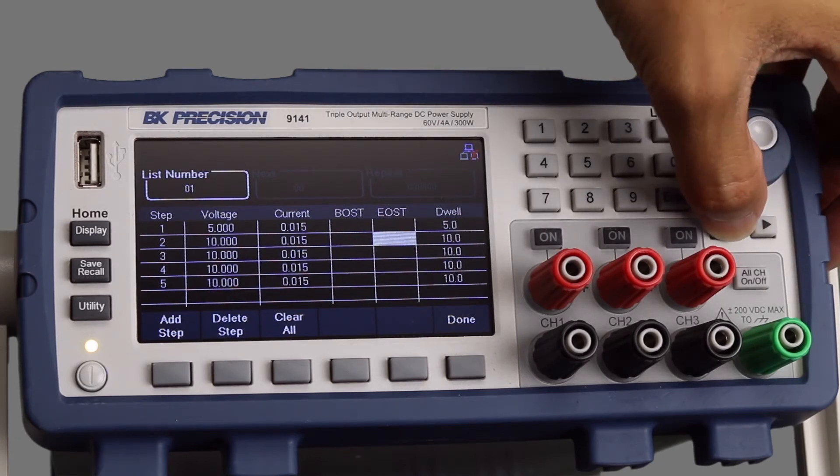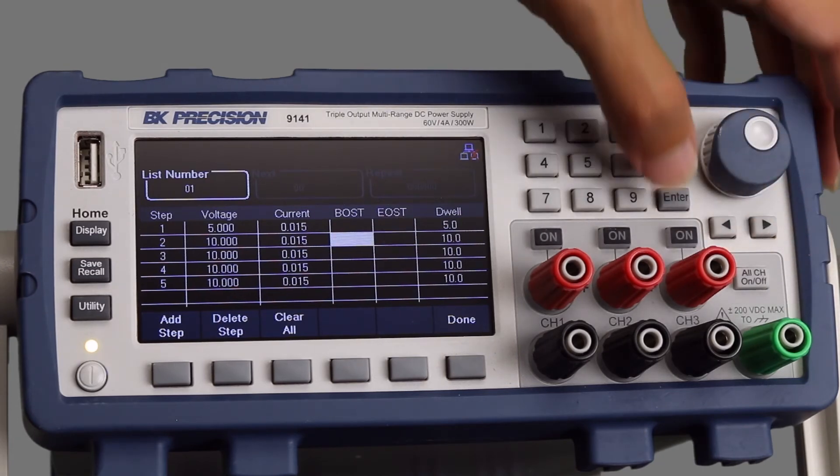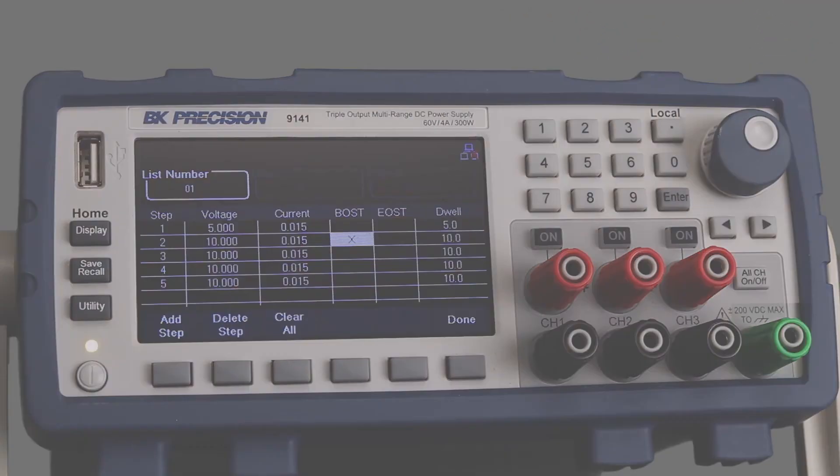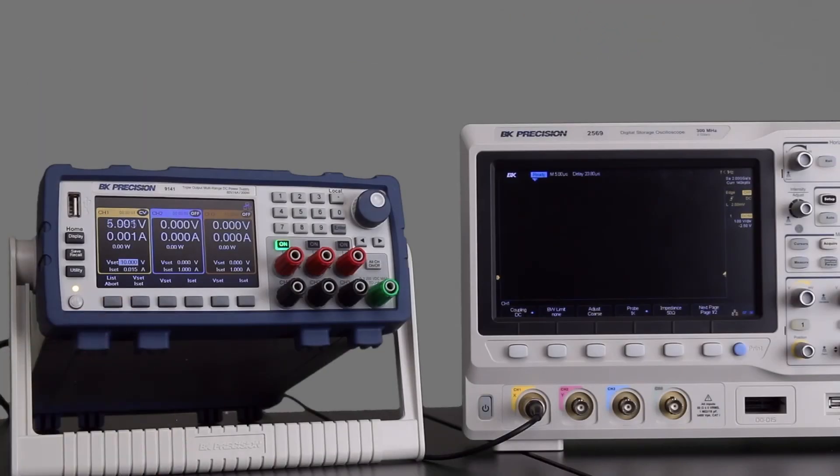For this list, we'll add a step trigger to the beginning of step 2. When we run the list, you can see the trigger signal on the oscilloscope.